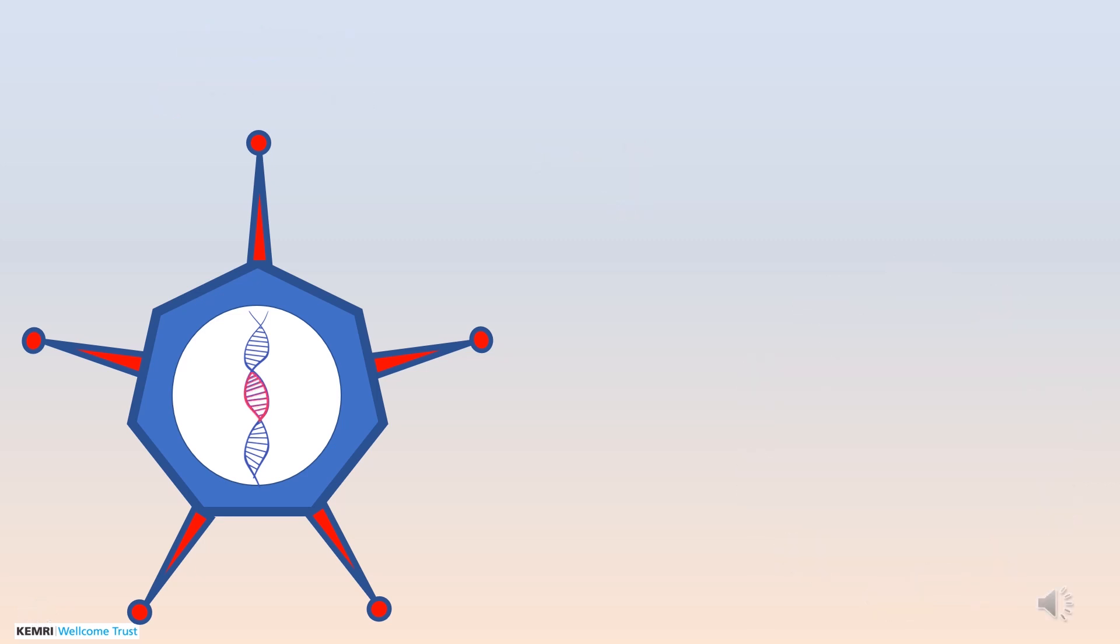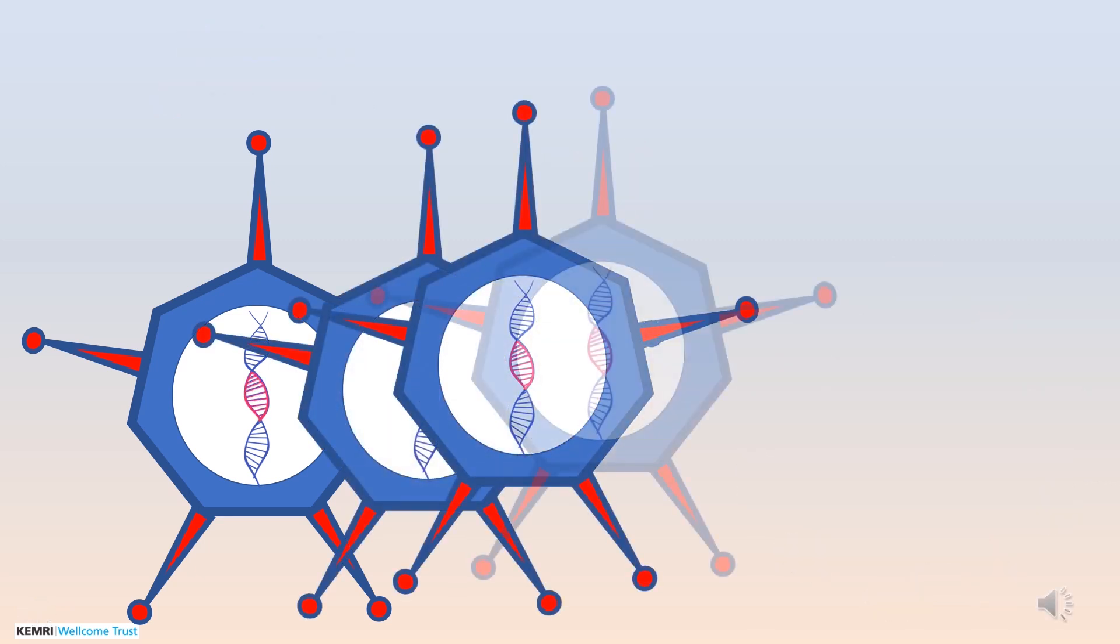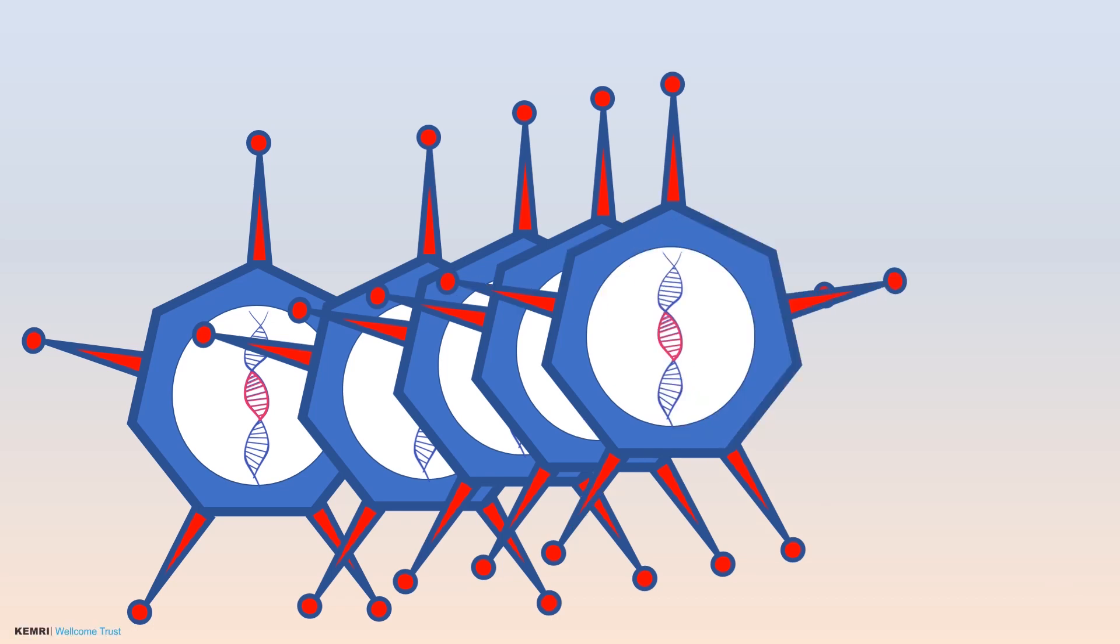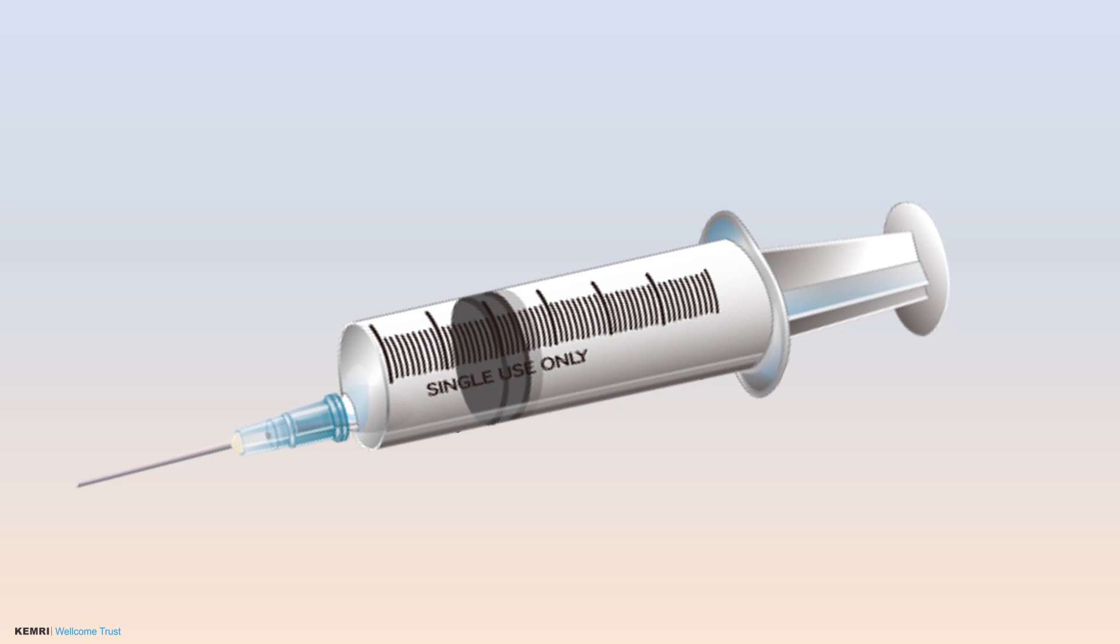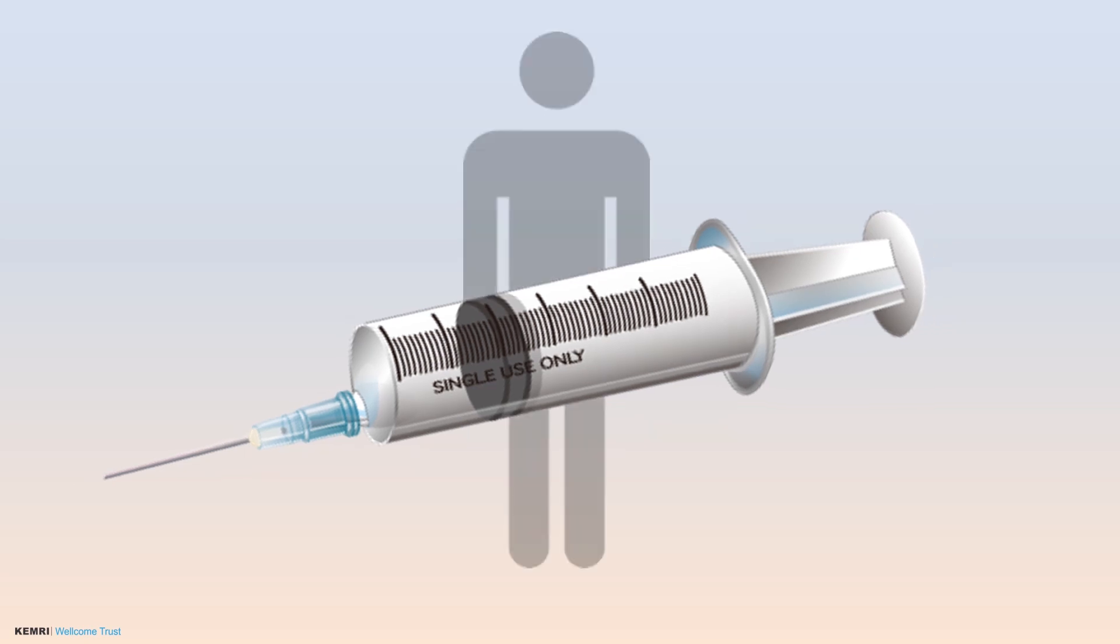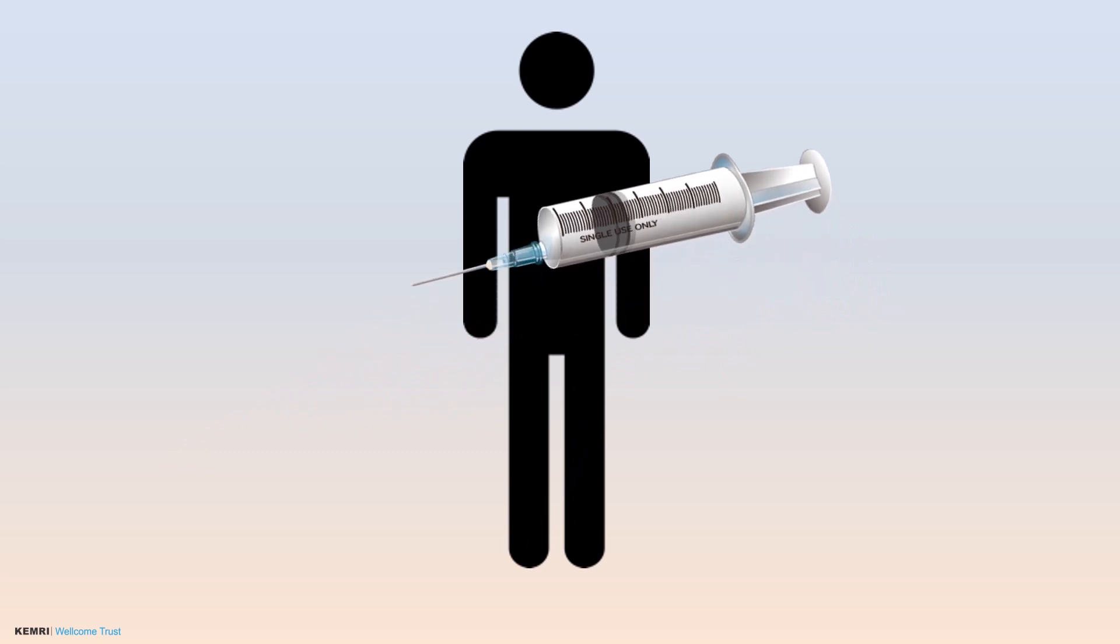More of this modified adenovirus is made so that a vaccine can be prepared. A similar approach was used to make the Ebola vaccine that controlled the epidemic in West Africa. The approach is also used in development of vaccines for other diseases of public health importance in Africa and Europe.